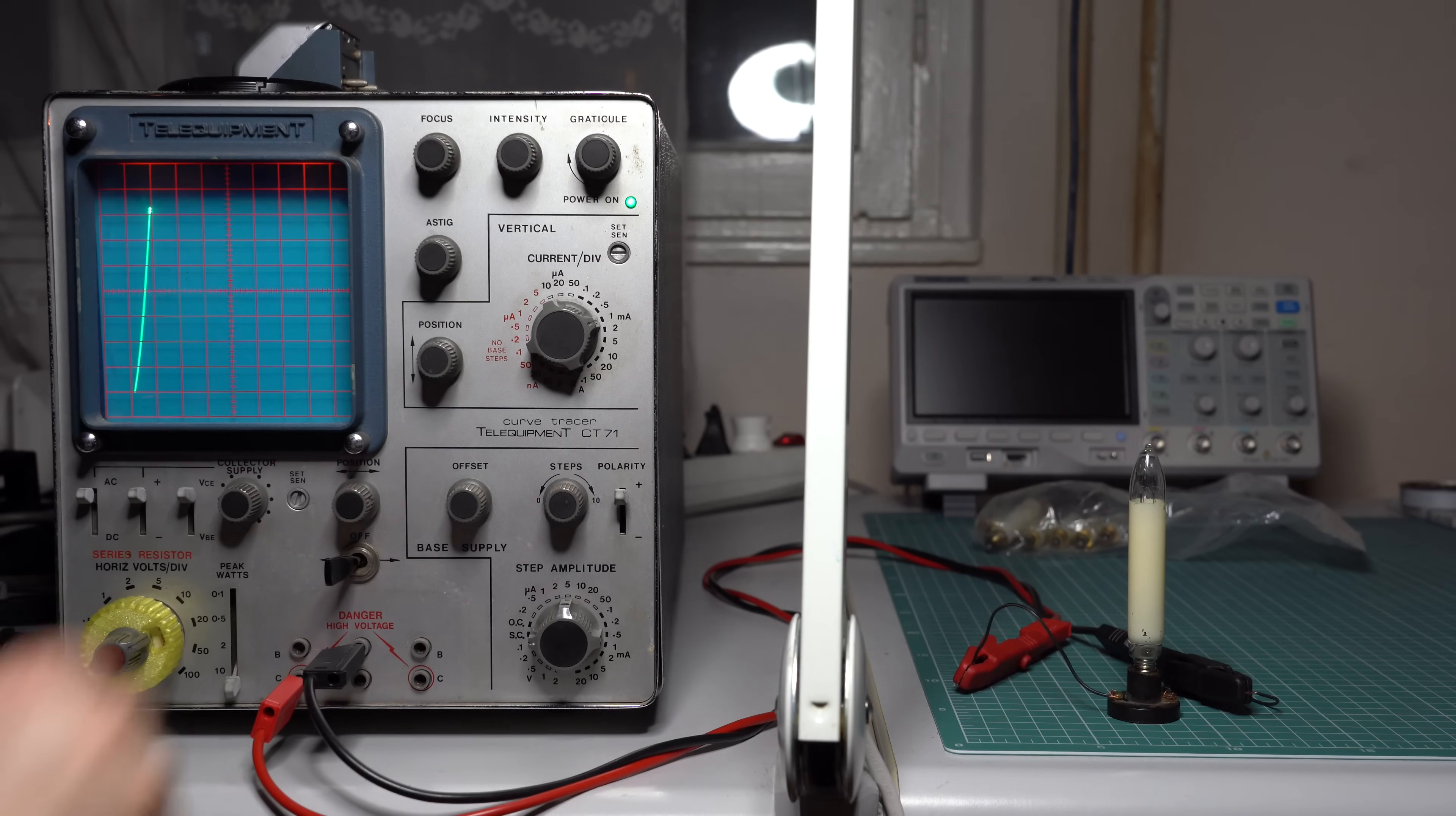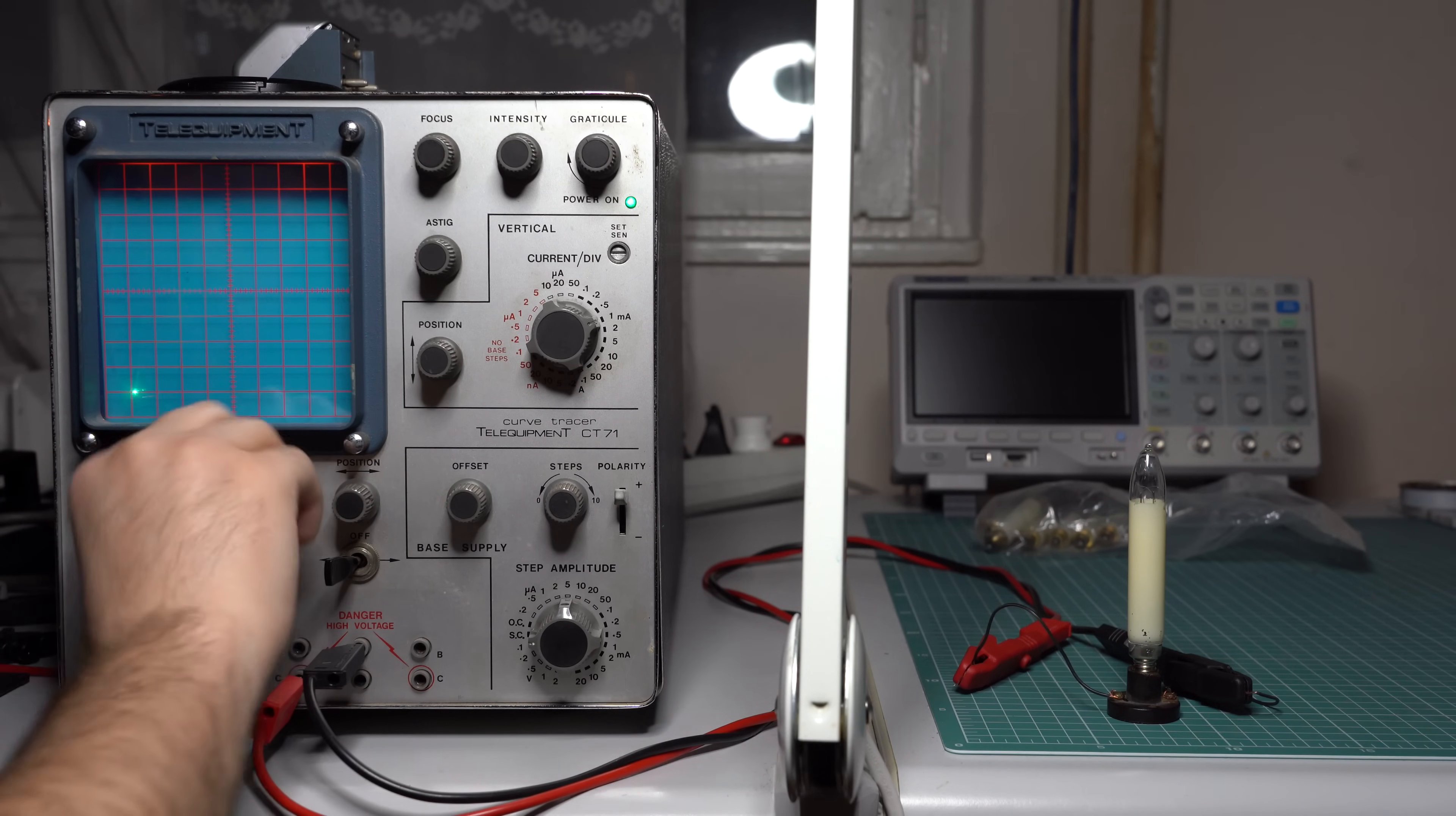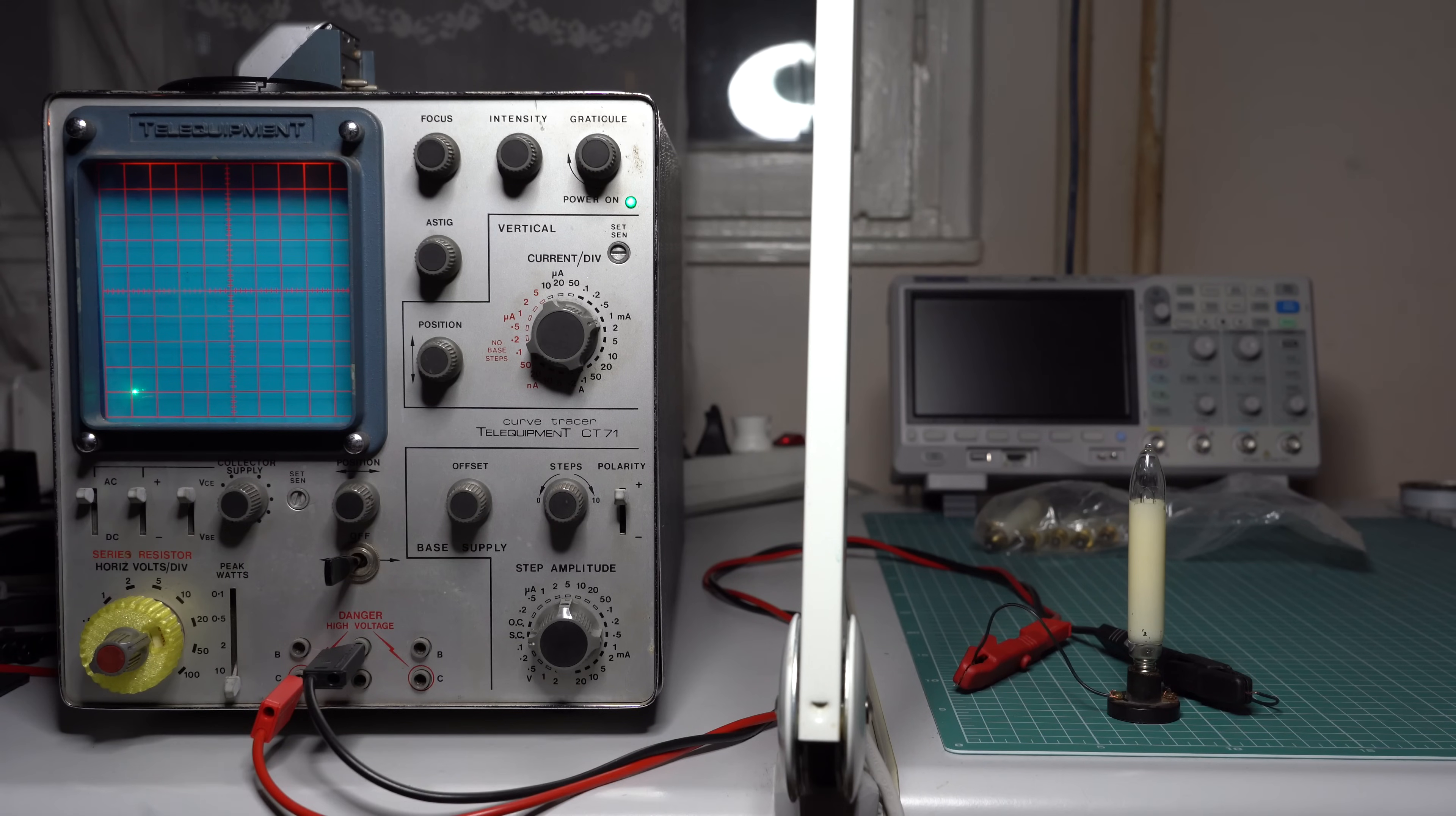So what happens is that the bulbs have a hidden varistor inside. During normal operation the varistor sees about 15 volts so it doesn't conduct. However when the filament opens the varistor sees the full mains voltage and it just shorts out and bypasses the broken filament. And that keeps the other lights on.